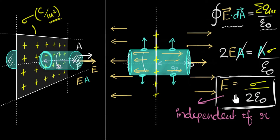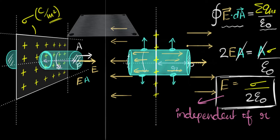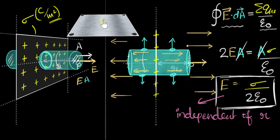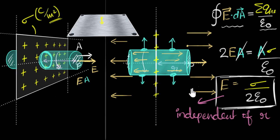What does this mean practically? If you have a charged finite plate, then as long as you are close to it — near the center — the electric field is pretty much uniform. You can assume the plate to be infinitely big and use this value. If you go far away, the electric field dies off. So the electric field due to an infinitely big sheet, or close to a large metallic sheet, is sigma divided by two epsilon naught.